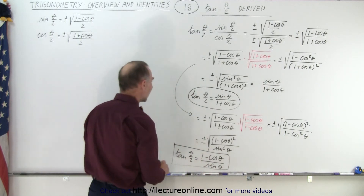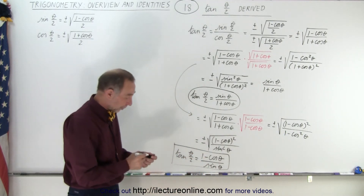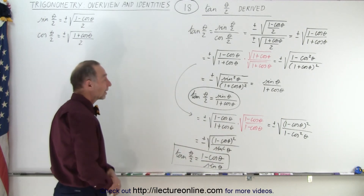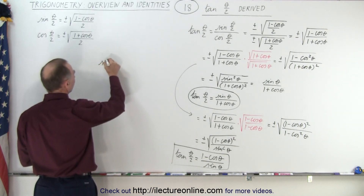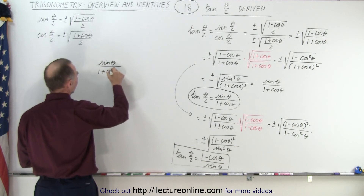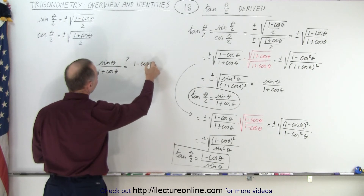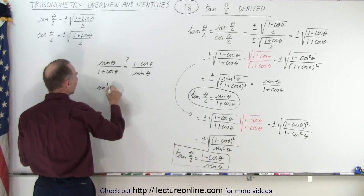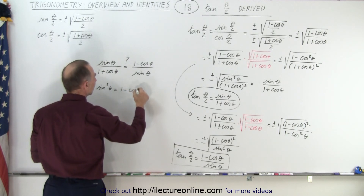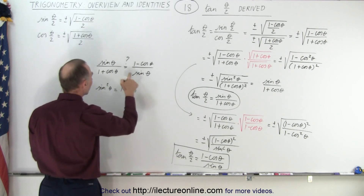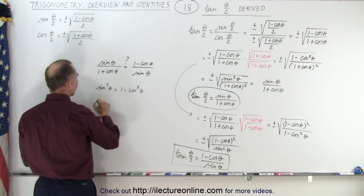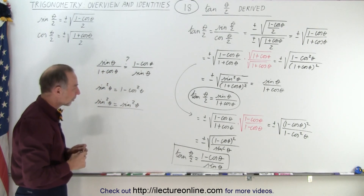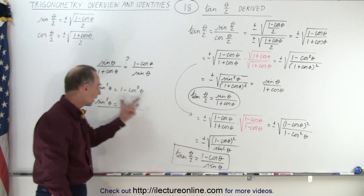Both forms are equally valid — whichever you prefer. That also means that sinθ/(1 plus cosθ) must equal (1 minus cosθ)/sinθ. Let's verify: if we cross-multiply, the left side gives sin²θ, and the right side gives (1 minus cosθ)(1 plus cosθ) = 1 minus cos²θ = sin²θ. So sin²θ equals sin²θ, confirming both forms of the tangent half-angle identity are the same.